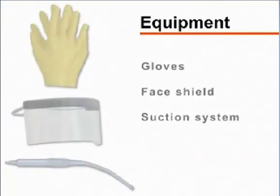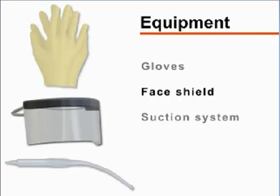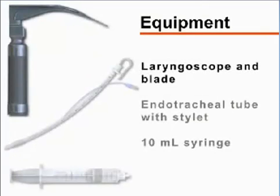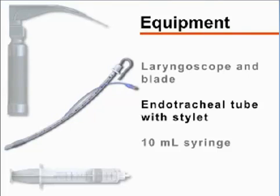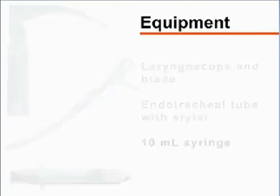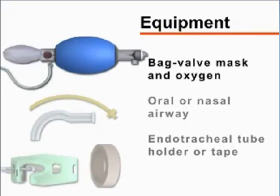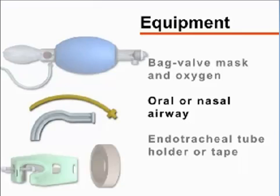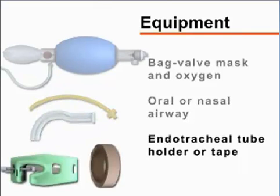Begin by gathering the required equipment. You will need gloves, a protective face shield, and a working suction system, a laryngoscope with appropriate blade, an endotracheal tube with stylet, and a 10 milliliter syringe. You will also need a bag valve mask attached to oxygen, an oral or nasal airway, and tape or an endotracheal tube holder.